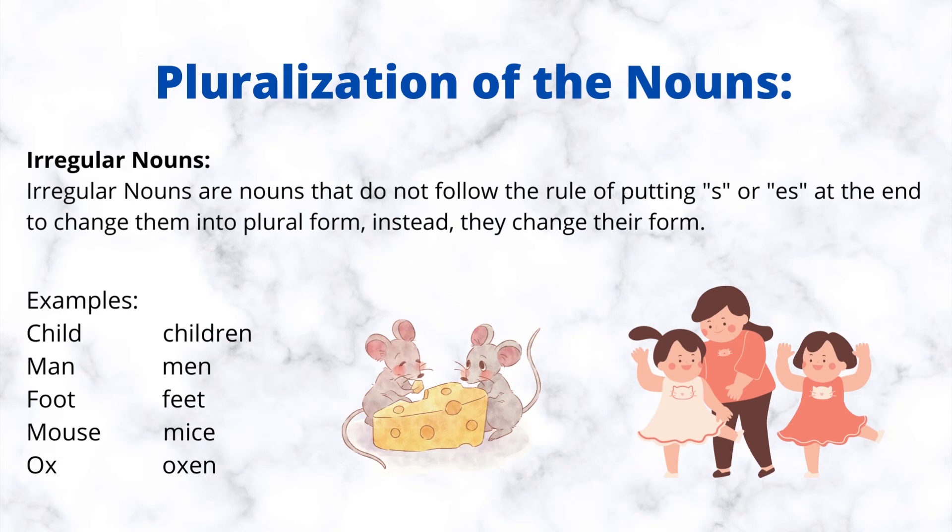Irregular nouns are nouns that do not follow the rule of putting s or es at the end to change them into plural form. Instead, they change their form. Examples: child, children.